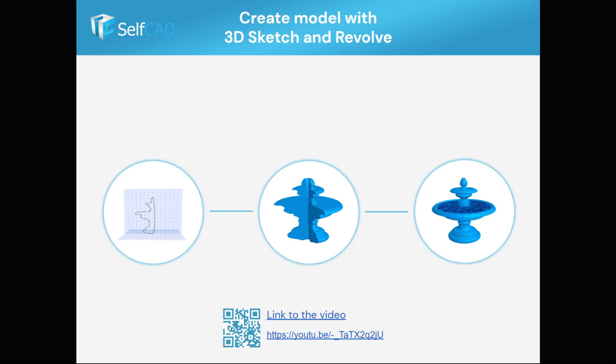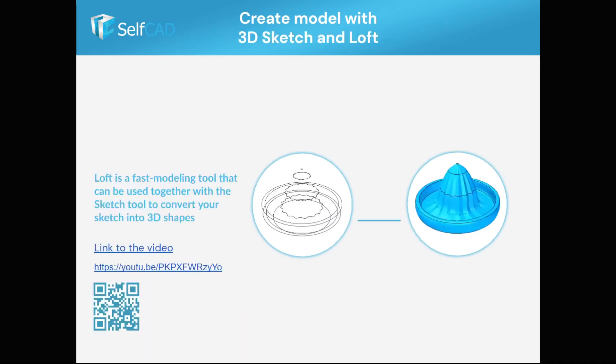In this example, you can see how you can simply draw a profile and use it to revolve around 360 degrees or less to create a really nice and complex object. Revolve is very easy to use in SelfCAD and is great when the entire circular direction has the same details.